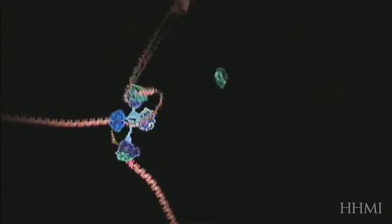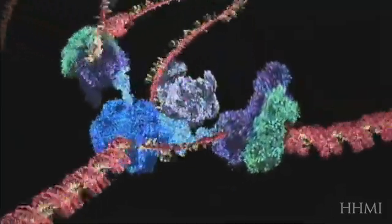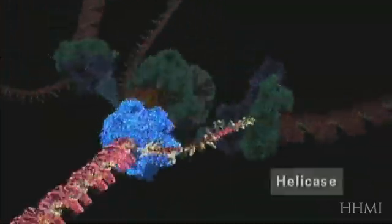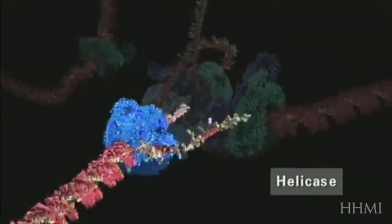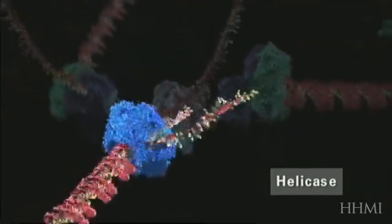The first step in DNA replication is the separation of the two strands by an enzyme called helicase. This spins the incoming DNA to unravel it, at 10,000 RPM in the case of bacterial systems.